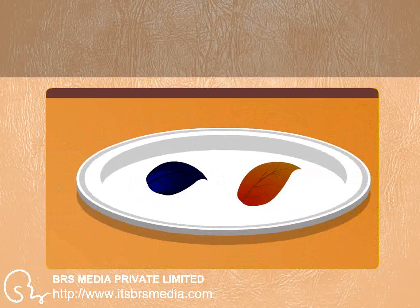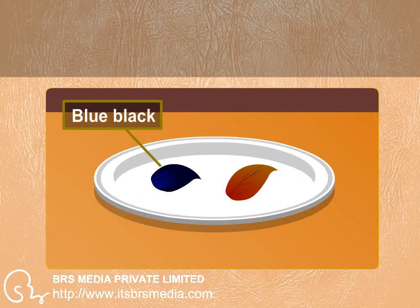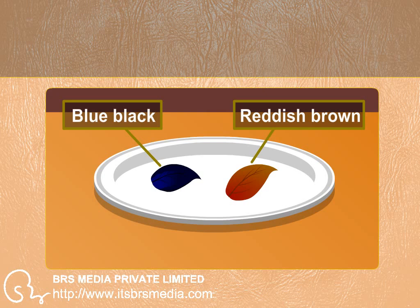You will observe the leaf that was in light will turn blue-black, which demonstrates that the leaf has been performing photosynthesis and producing starch, and the other leaf will be reddish-brown. This shows that leaves other than green also have chlorophyll. The large amount of brown color masks the green color. Photosynthesis takes place in these leaves also.